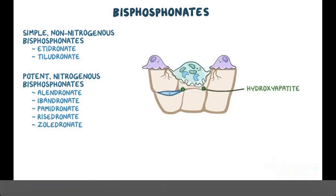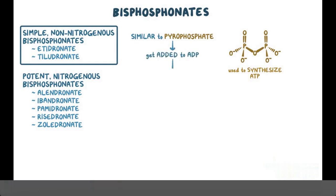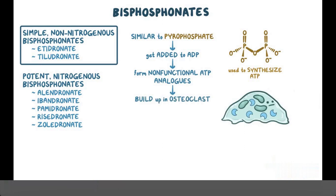When osteoclasts break down bones, they also take in the bisphosphonates. Simple non-nitrogenous bisphosphonates are very similar to pyrophosphate, which is used to synthesize the ATP that provides energy in living cells. So bisphosphonates work by getting added to ADP to form non-functional ATP analogs that don't provide energy. Instead, they build up in the osteoclast, which eventually leads to apoptosis or cell death, and ultimately fewer osteoclasts means less bone resorption.